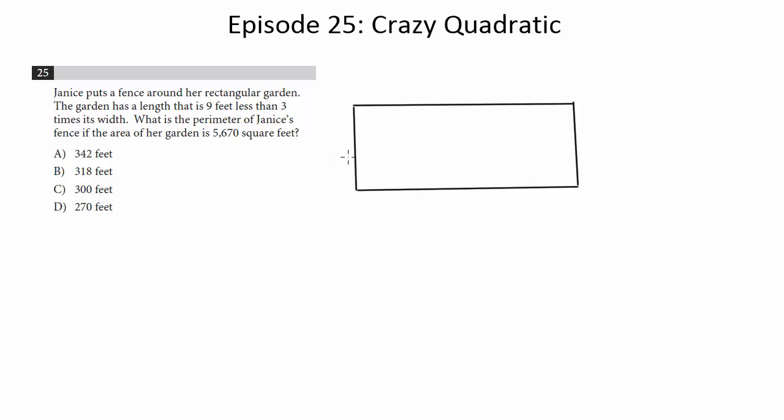So we need to come up with some expressions that will give us the length and the width, preferably in terms of one variable. I suppose you could do it in terms of two, but it's better to do it in terms of one. So I recommend, let's call this w, and if we call the width w, what would the length be? Well the length is 9 feet less than 3 times its width. So it's going to be 3 times its width, and then we subtract 9.